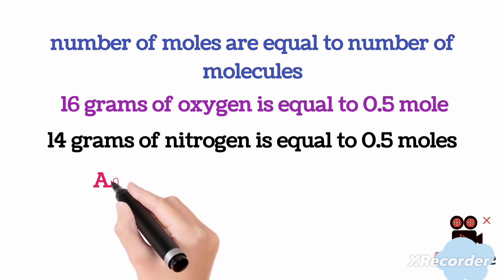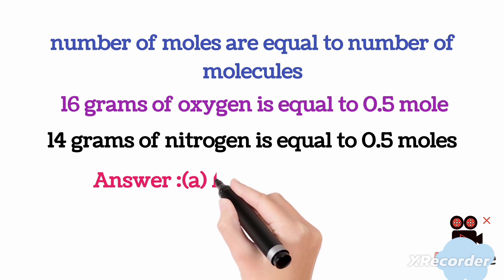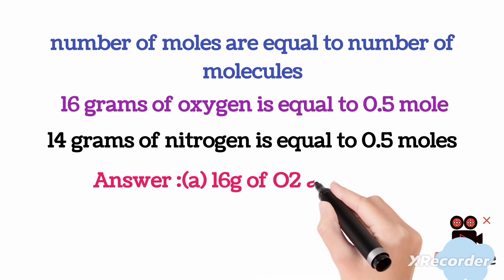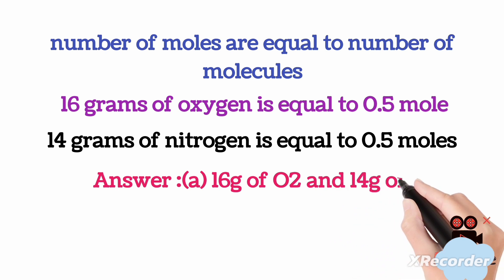This contains 3 into 10 to the power of 23 gas molecules. So option A, 16 grams of oxygen and 14 grams of nitrogen, contains exactly the same number of molecules.